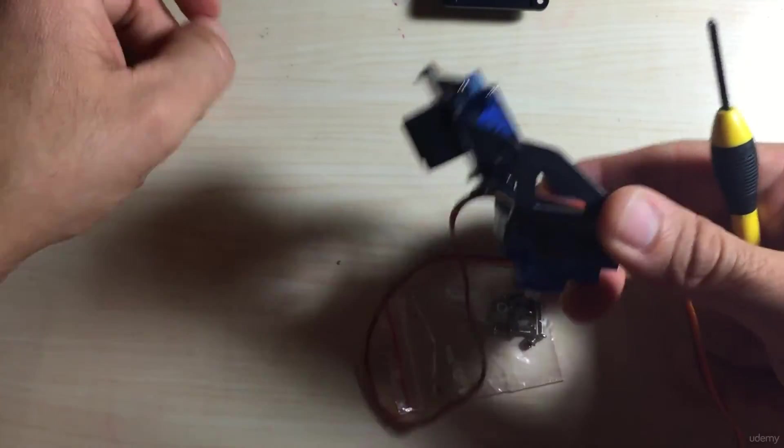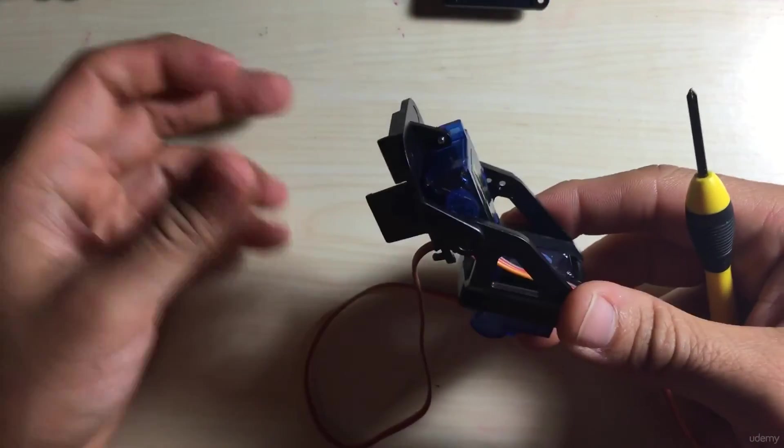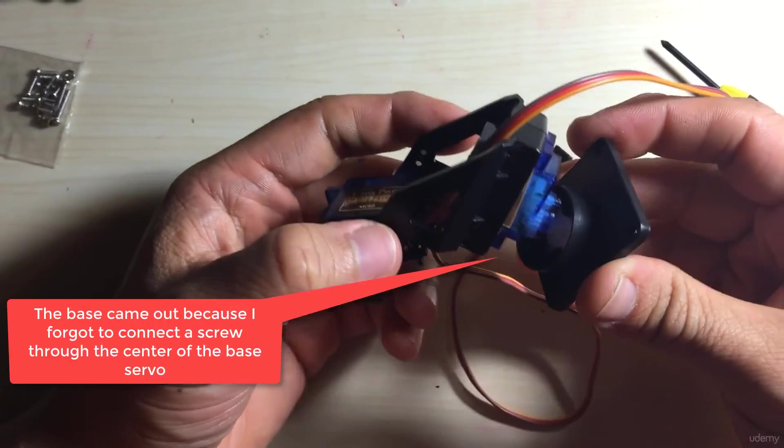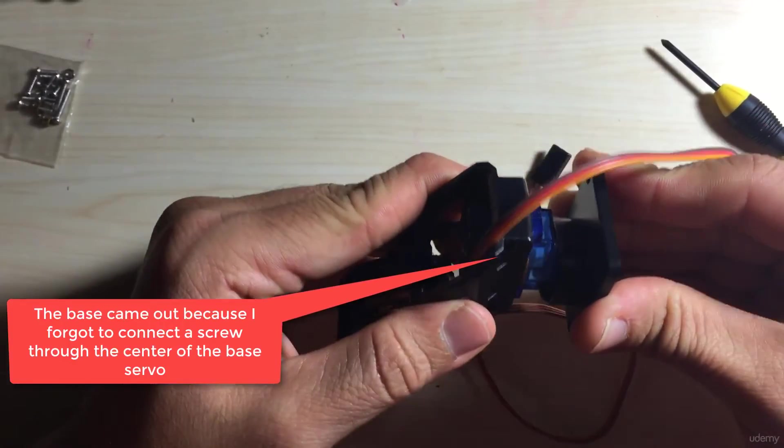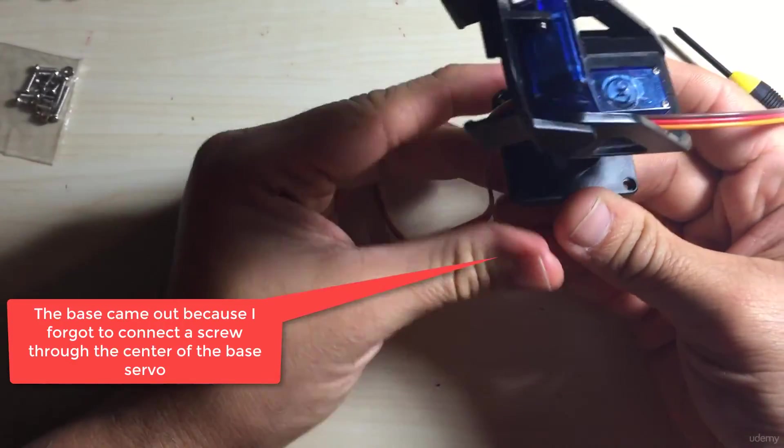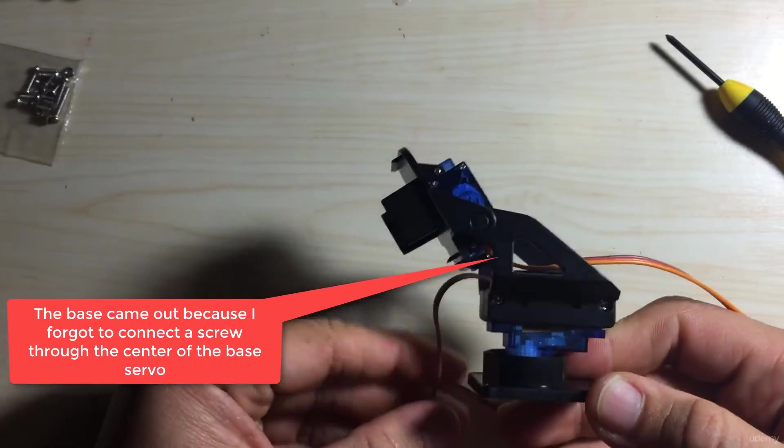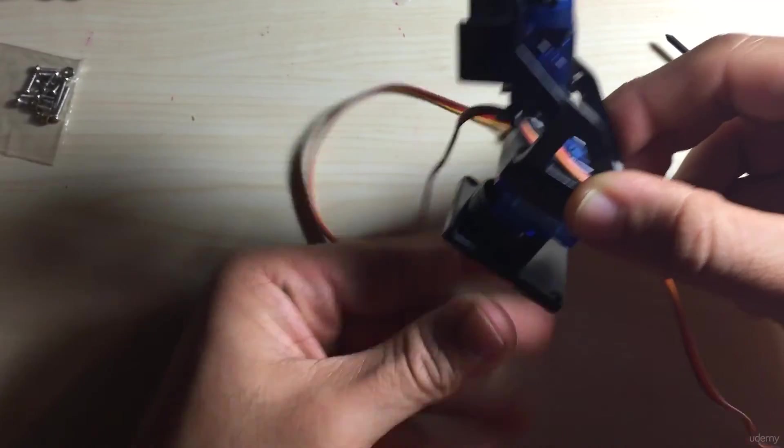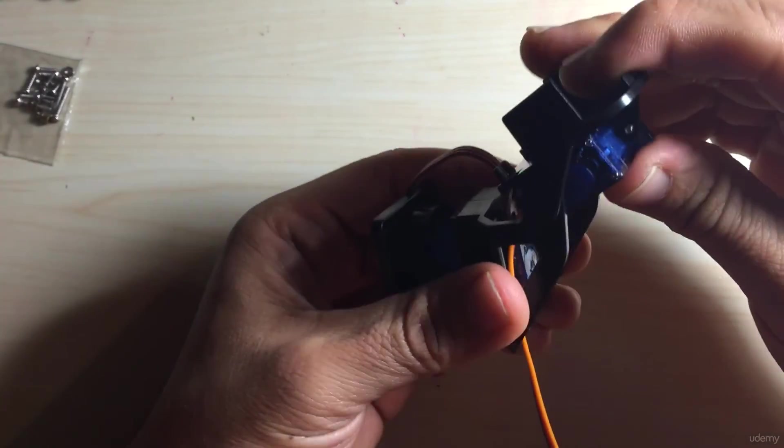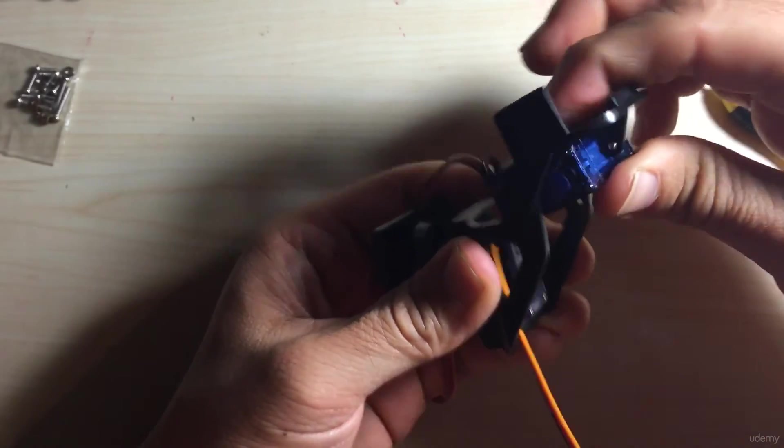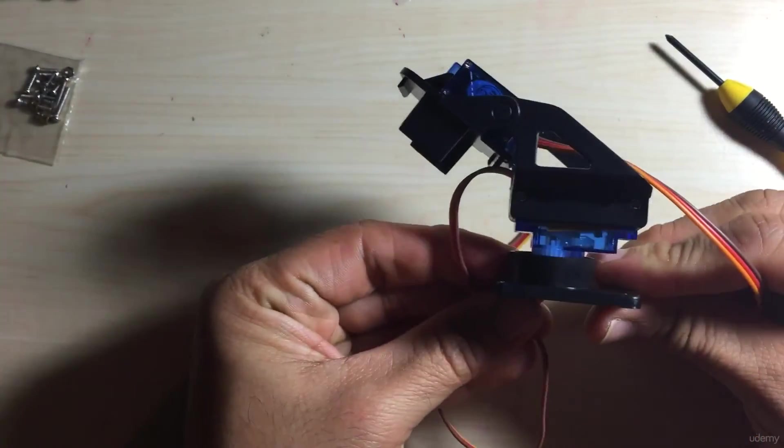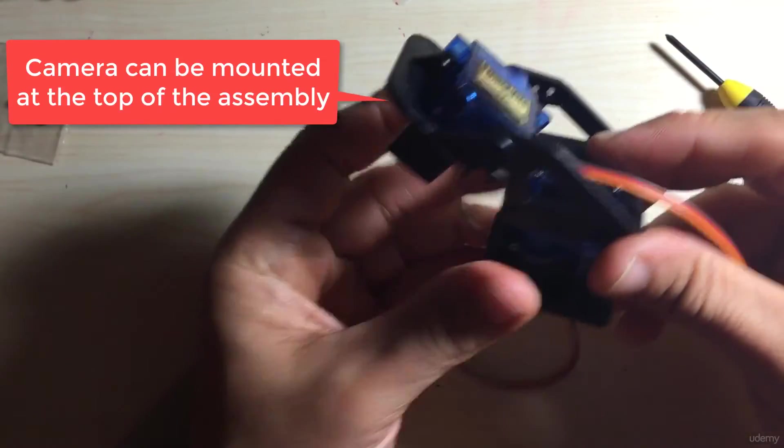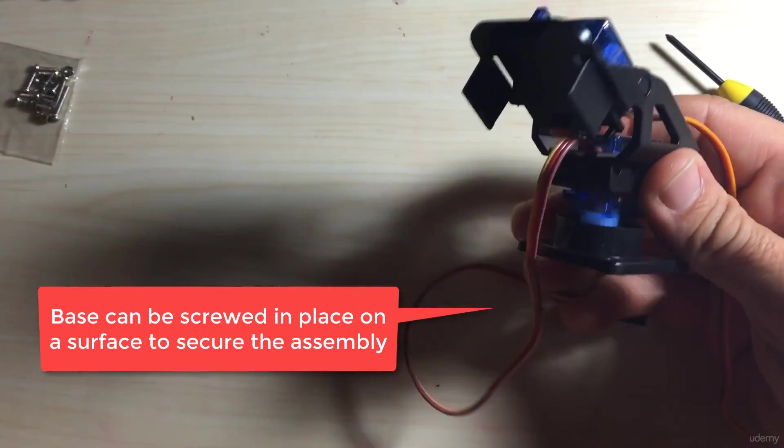All right so that should complete our assembly for our pan tilt. As you can see the base, so that came out when I was moving stuff around so I'll just go ahead and secure that in. So there you have it. This is the base and this will do the panning and the top will do the tilting. So there is our pan tilt assembly with our two servo motors and everything should be well hooked up together nicely.